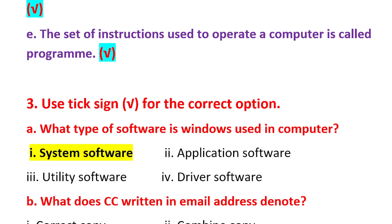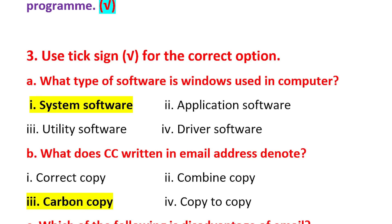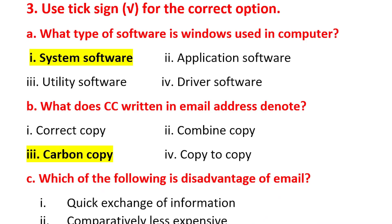Question 3: Choose the correct option. A) What type of software is Windows used in a computer? Windows is system software. B) What does CC in an email address denote? CC stands for carbon copy.